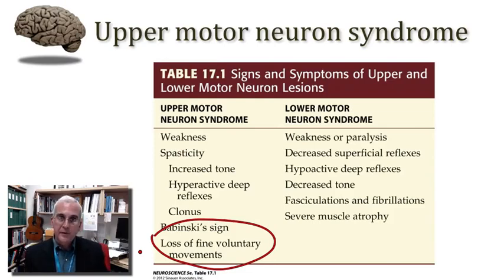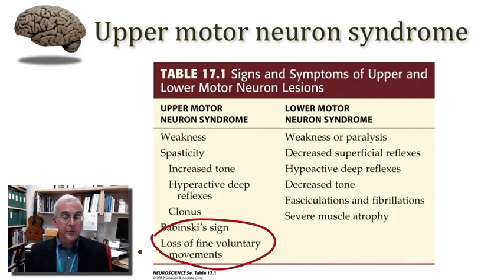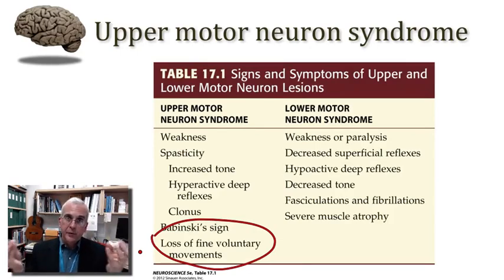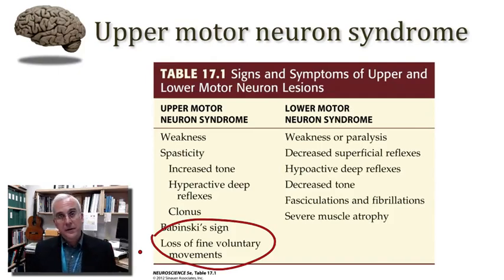If one had damage limited to the upper motor neuron systems of the brainstem, then we might expect there to be problems with postural control specifically. And if there were sparing of the pyramidal system, one might expect there to be residual activities that could be performed with the distal extremities. One can have a neuroanatomical framework for interpreting specifically the signs and symptoms of upper motor neuron injuries observed in any given patient.